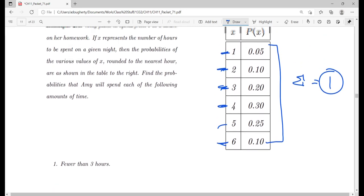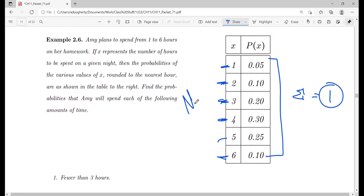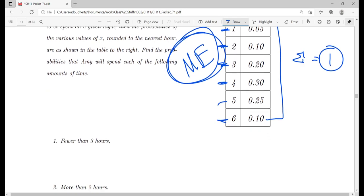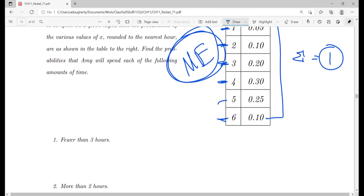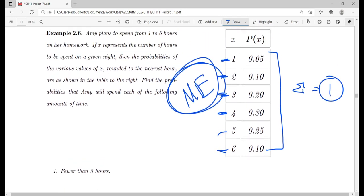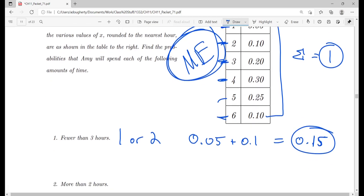The probability that she spends fewer than 3 hours. Again, these are all mutually exclusive. She can't spend 1 and 2 hours on Tuesday night. She either spends 1 hour or 2 hours. So fewer than 3 hours is basically saying 1 or 2. We're going to take that 0.05 plus our 0.1 and get that there is a 15% chance she spends less than 3 hours on her homework.